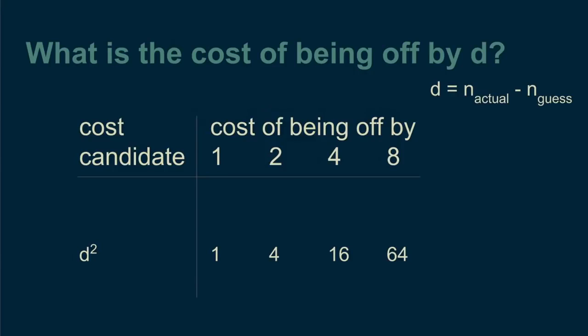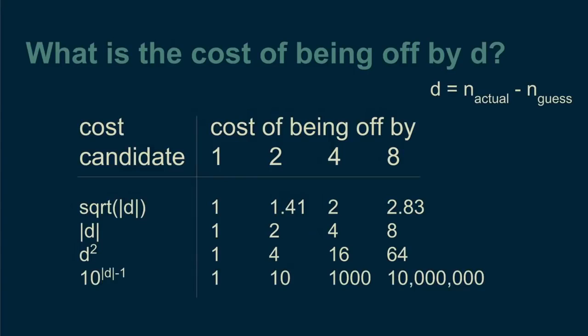Another common cost function is absolute deviation. That way, if a bag is twice as far away from the estimate as another, it incurs just twice the cost. For some problems, this cost function makes the most sense. There are lots of other options. For instance, the square root of the deviation or 10 raised to the power of the absolute value of the deviation could also work.